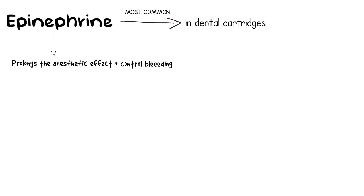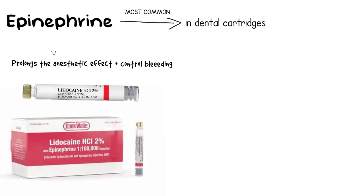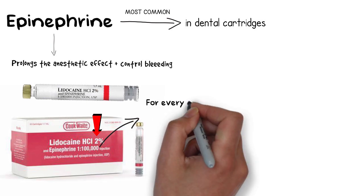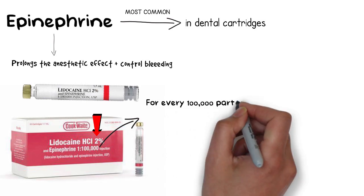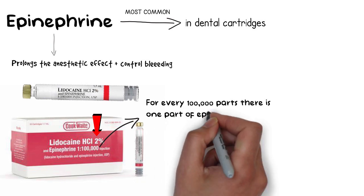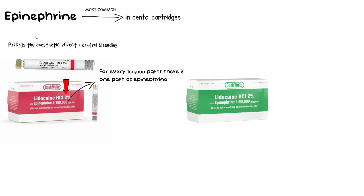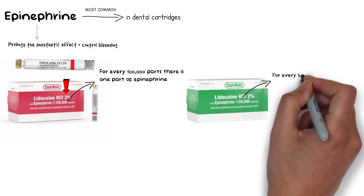There are many different combinations of epinephrine available in local anesthetic cartridges. Taking lidocaine as an example, lidocaine formulations in dental cartridges are available in many different forms, but the most commonly used is the formulation with 2% lidocaine with 1 part per 100,000 parts of epinephrine. This means that along with other contents, there is 2% lidocaine and for every 100,000 parts, there is 1 part of epinephrine present in the cartridge.